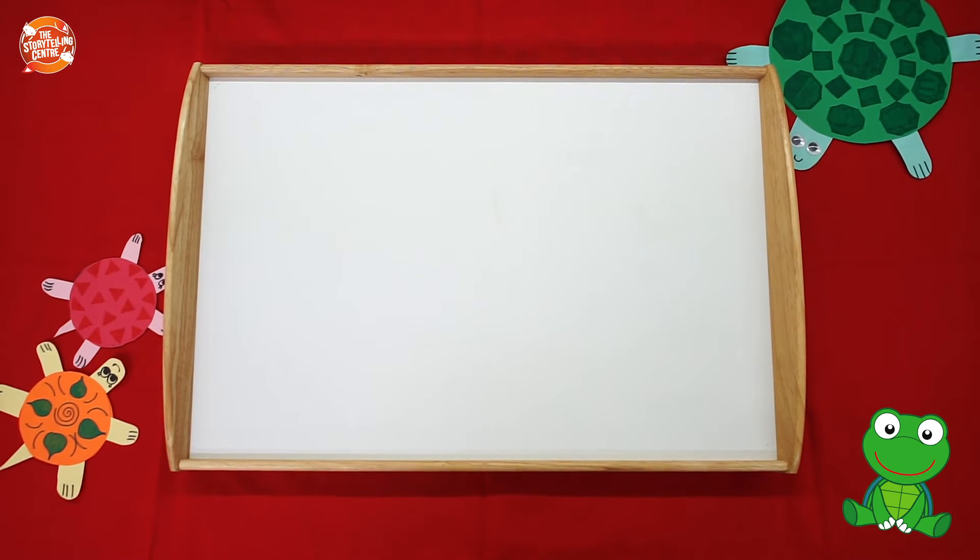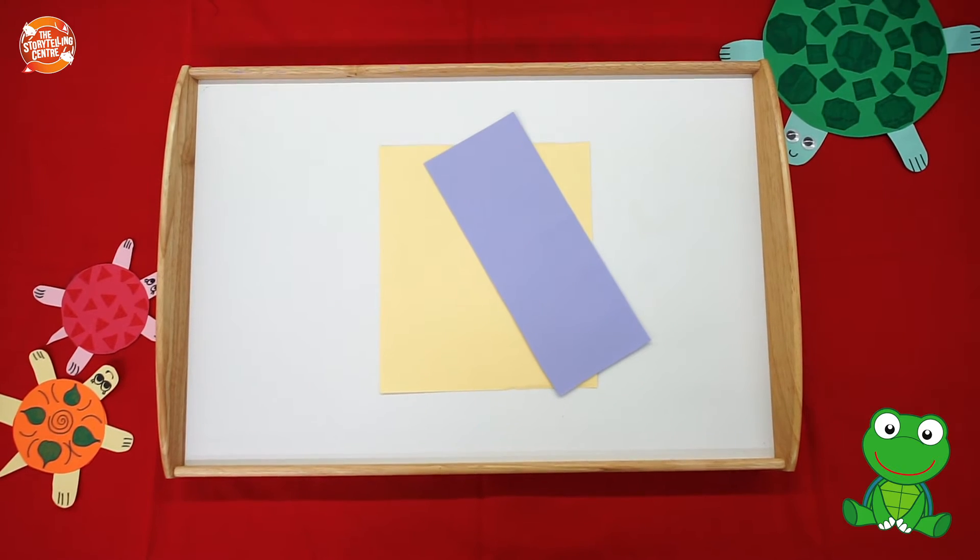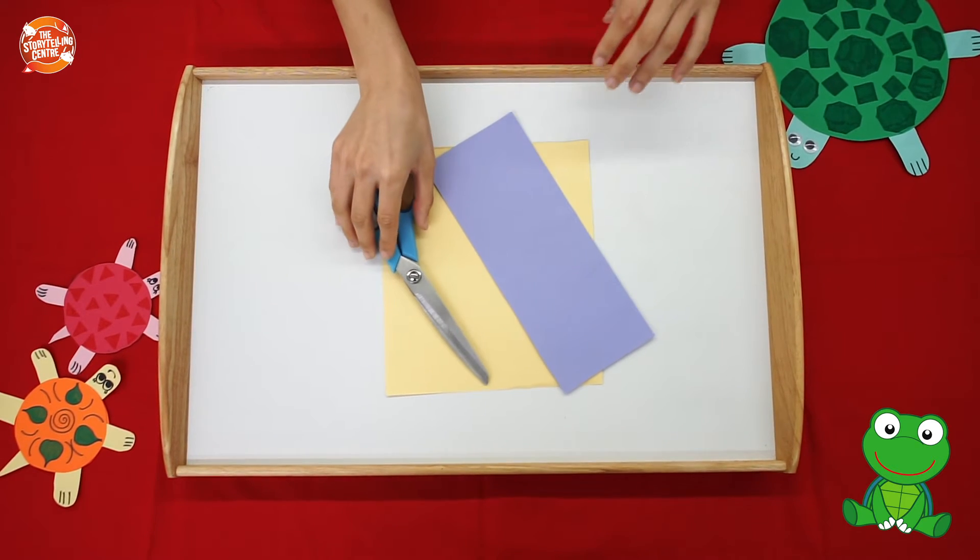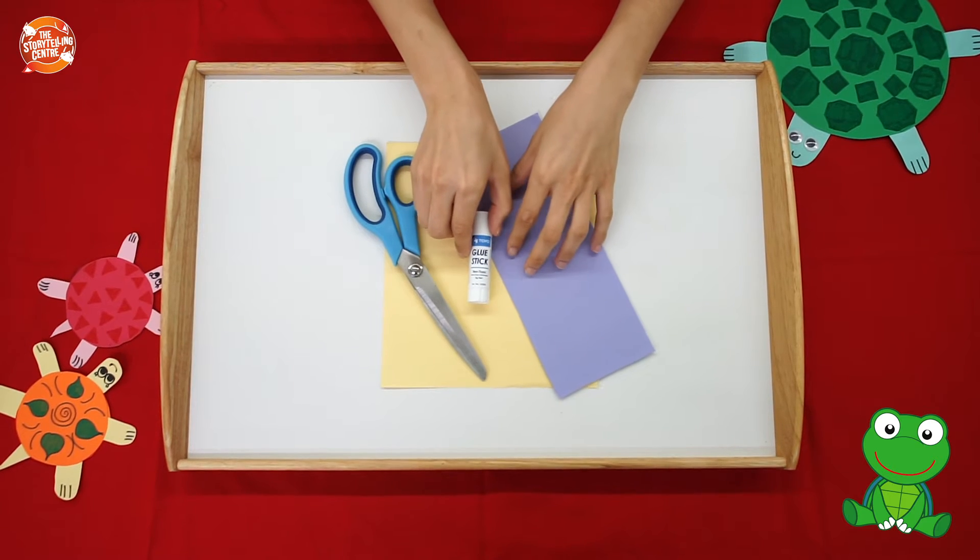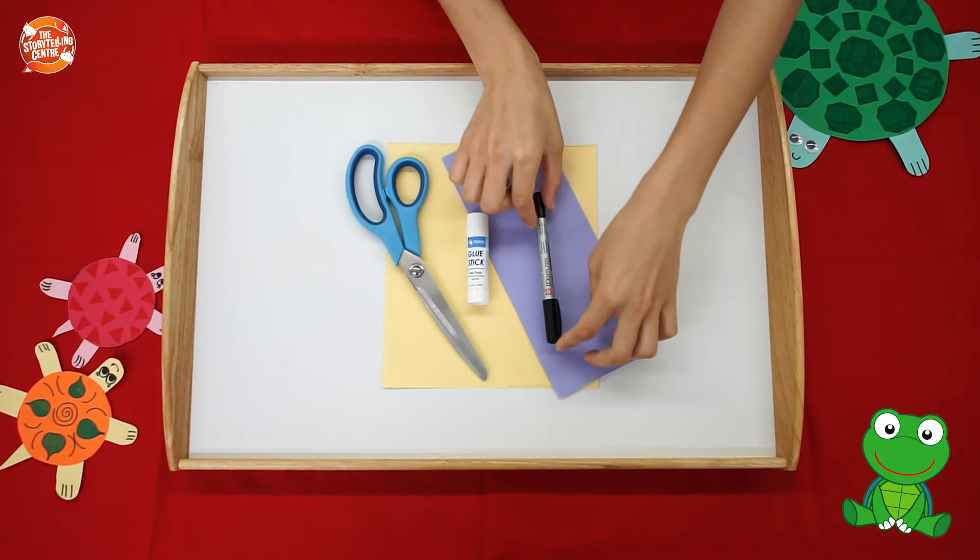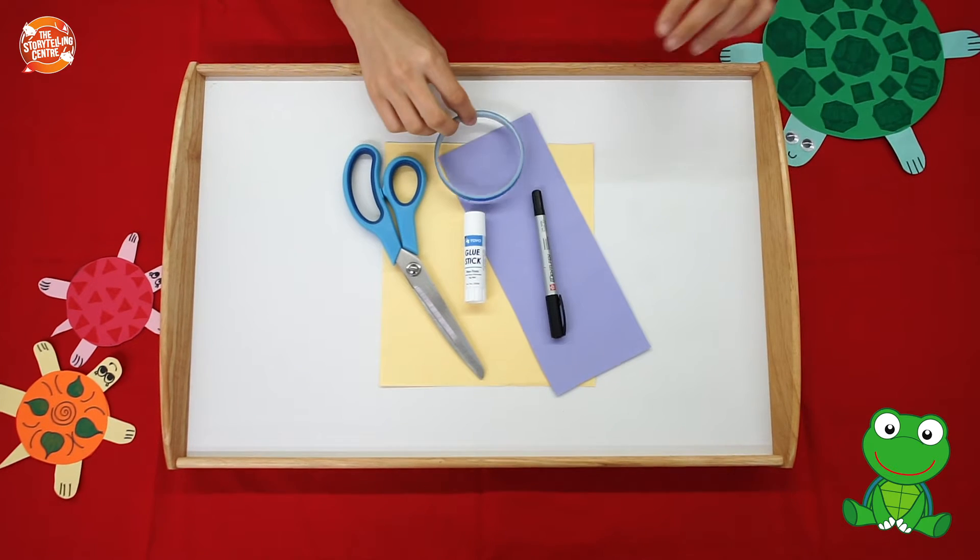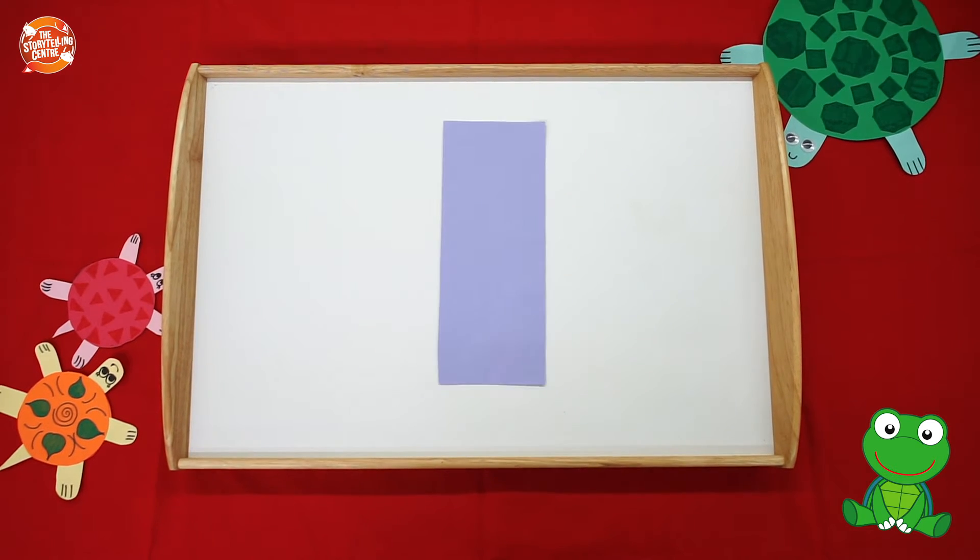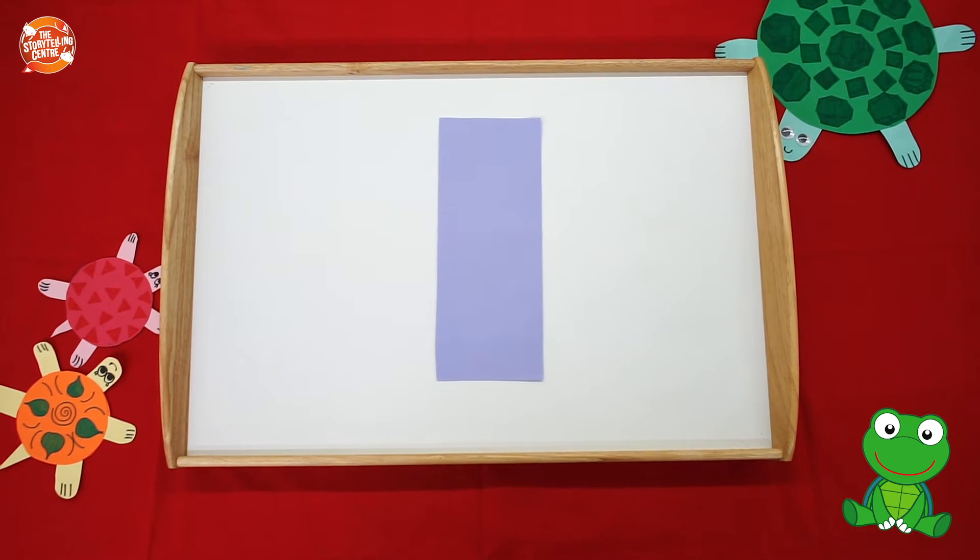What you will need are two pieces of paper, a pair of scissors, a glue stick, something to write with, and something circular. You can find this at home. You can use a roll of tape, a coaster, or even a plate.